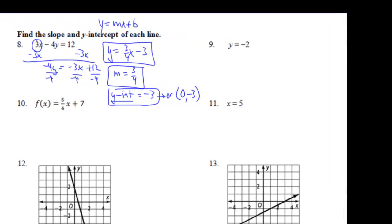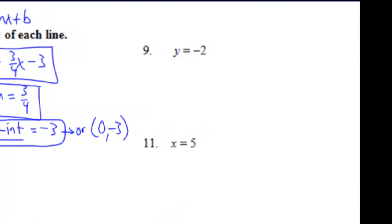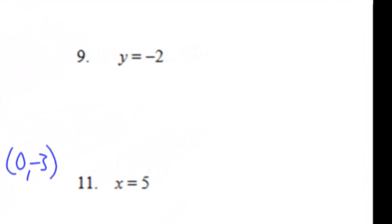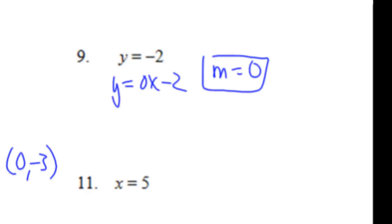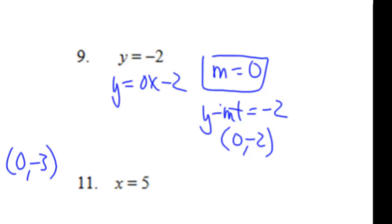For number 9, notice there's no x variable. We can assume it's y equals 0x minus 2. So the slope m equals 0 — it's a horizontal line. The y-intercept is negative 2, written as negative 2 or the point (0, negative 2).